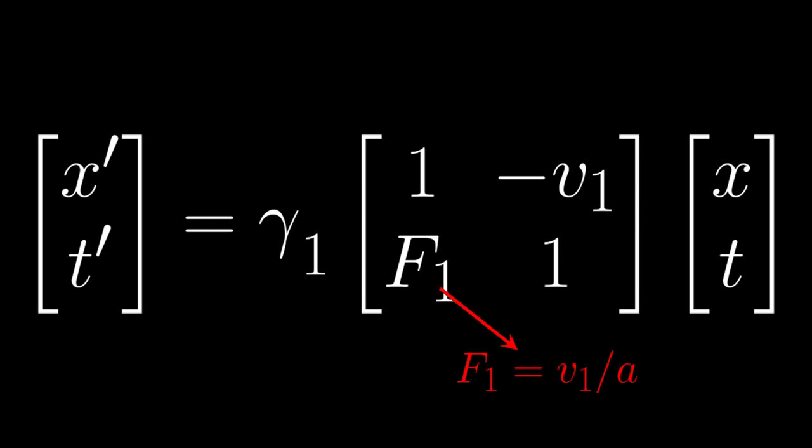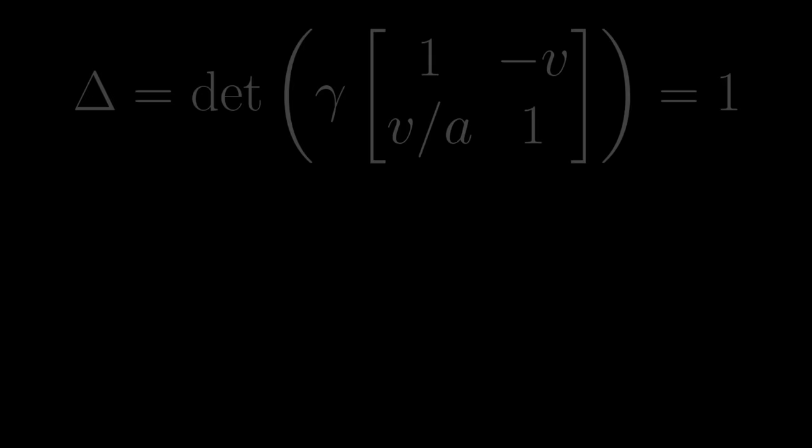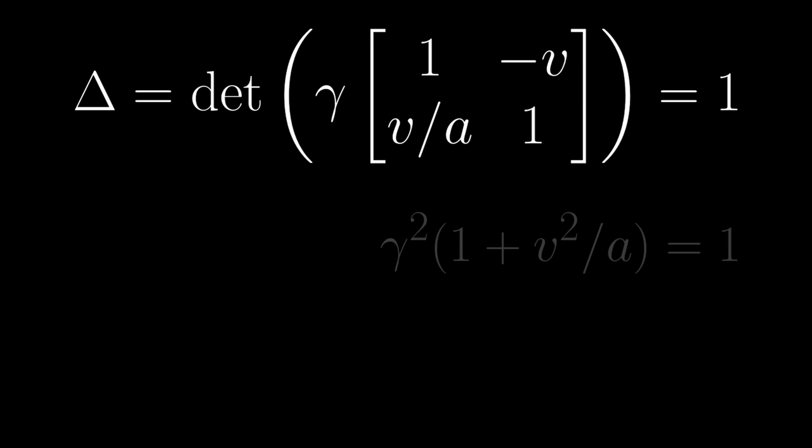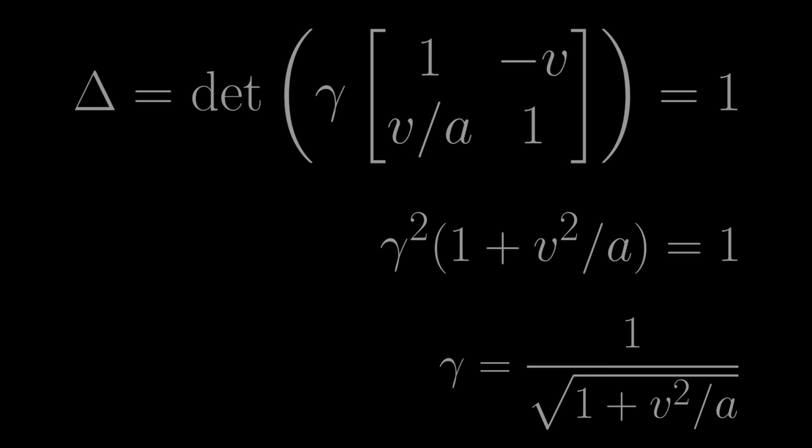Now let's take a moment to remind ourselves of another useful fact that was already derived earlier. Namely, that the determinant of any transformation matrix must equal 1, no matter whose frame of reference it happens to represent. A little bit more algebra later, and we find that our mysterious Lorentz factor must evaluate to the following. We are therefore left with a coordinate transformation that finally looks like this.